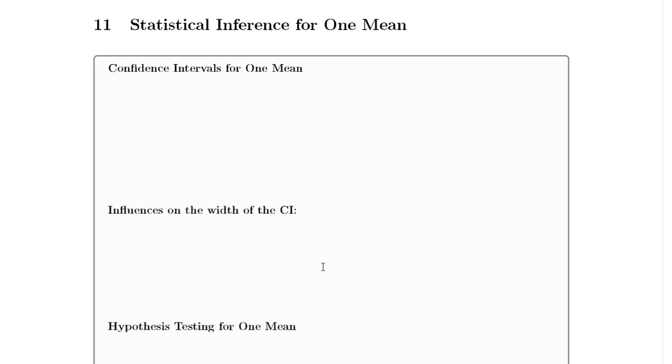With confidence intervals, our point estimate, remember the idea is that we're inferring the mean of the population. Instead of thinking about proportions, we're going to be thinking about means this time. So our point estimate is going to be the sample mean x-bar.